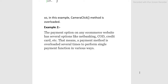Example 2: The payment option on any e-commerce website has several options like net banking, COD, and credit card. That means a payment method is overloaded several times to perform a single payment function. So payment is the function, and net banking, COD, and credit card are the overloaded methods.